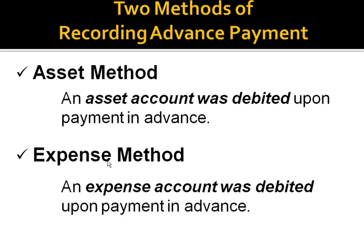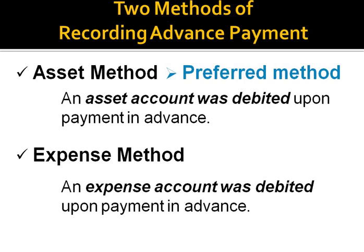Nonetheless, the asset method is obviously the preferred method, because advance payment for future expense is really an asset. That is why the account title prepaid expense or deferred expense is classified as asset. Now, maybe you would like to ask me: why, in spite of the fact that prepayment or advance payment is clearly an asset, some would choose to record it as an expense?